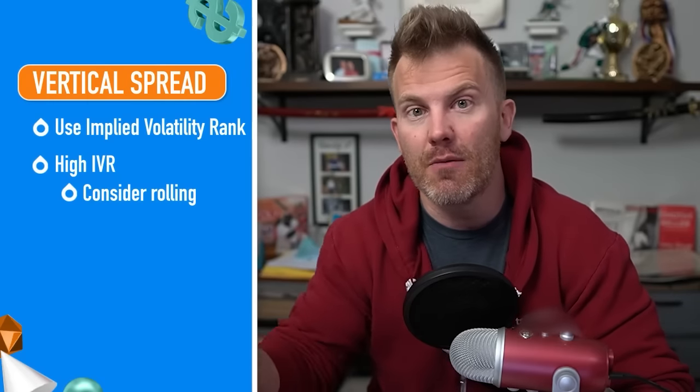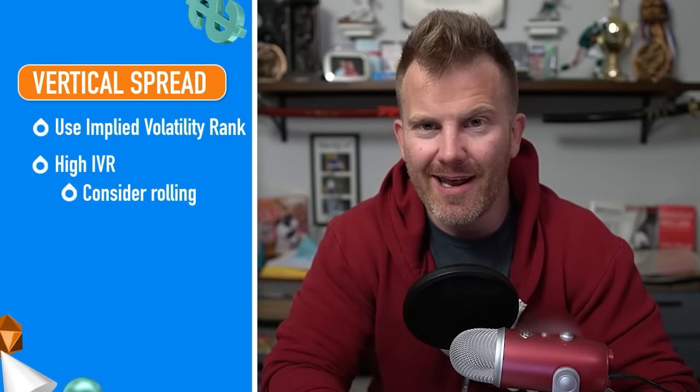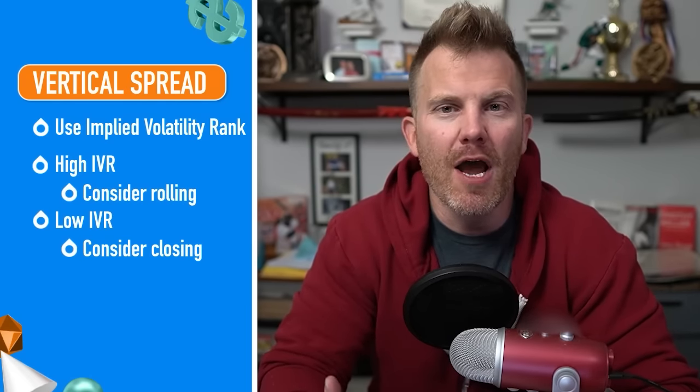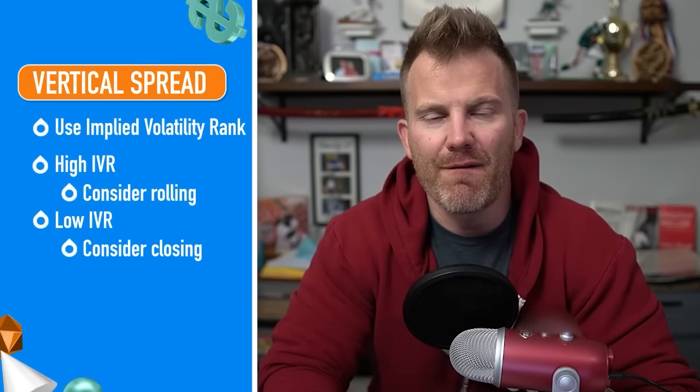What about everything in between — the dance floor situations at 21 days to go with a scratch, small winner, or small loser? Look at the IVR — the implied volatility rank. If it's still elevated like when you put the trade on, consider keeping it on, because implied volatility is mean-reverting and that will help you reach your profit target. If IVR has collapsed, it might be time to take the trade off whether it's a small winner, small loser, or scratch.